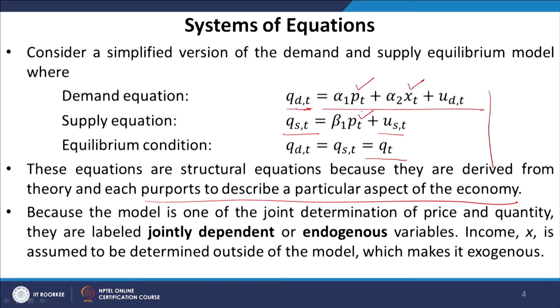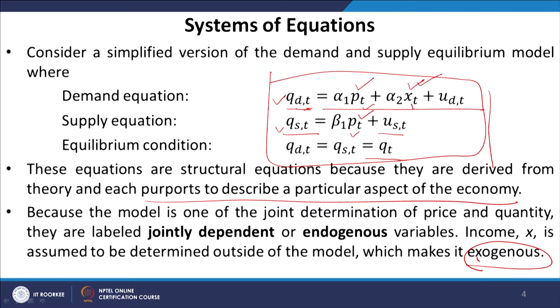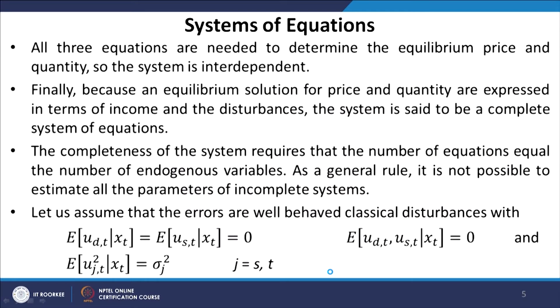Because the model involves joint determination of price and quantity, these are labeled jointly dependent or endogenous variables. Price and quantity both appear and are determined together — the structural equation is designed to determine both the equilibrium price and quantity. X could be income of individuals, which is determined outside the model, making it an exogenous variable. So x is exogenous, q is endogenous, and p is also endogenous. All three equations are needed to determine equilibrium price and quantity, making the system interdependent.